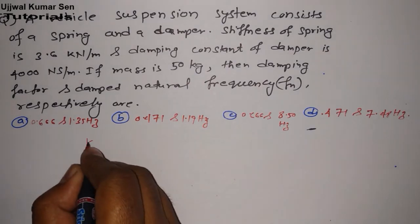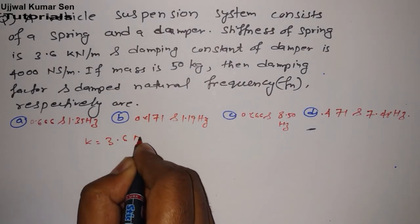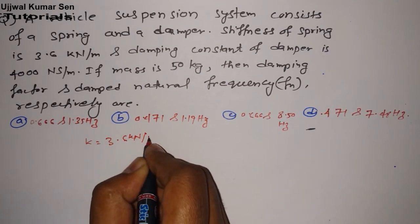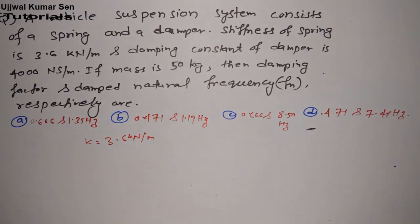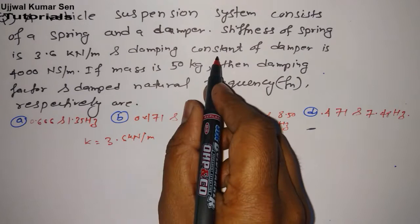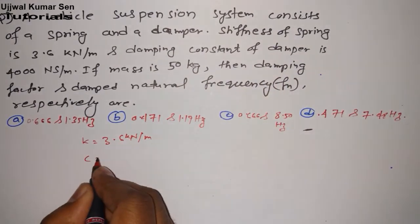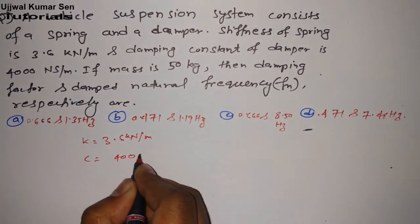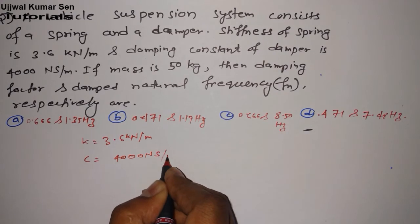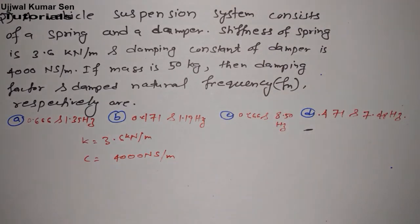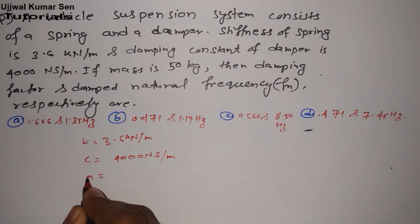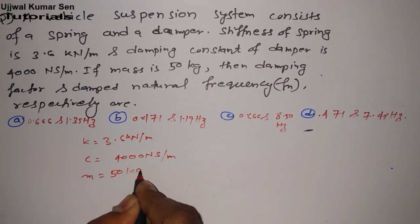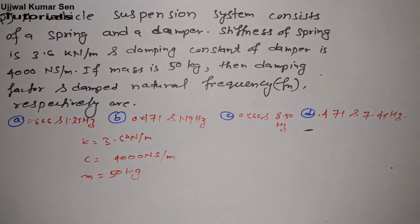Stiffness of the spring, so write down k is 3.6 kilonewton per meter. Here you will make mistake, I am sharing, I will share with you. Damping constant of damper, that is c is equal to 400 newton second per meter. And if mass m is equal to 50 kg, then find damping factor and damped natural frequency.